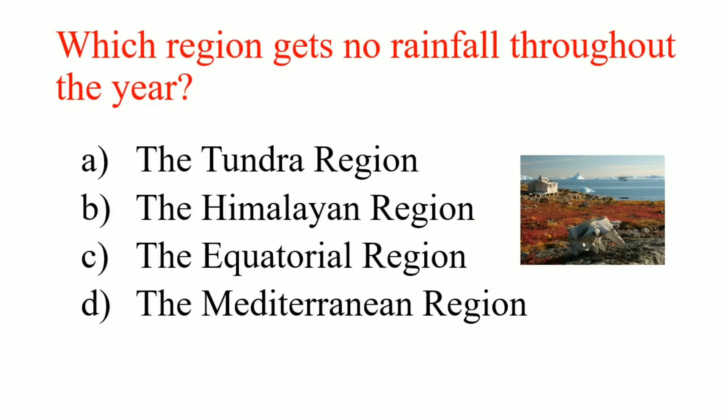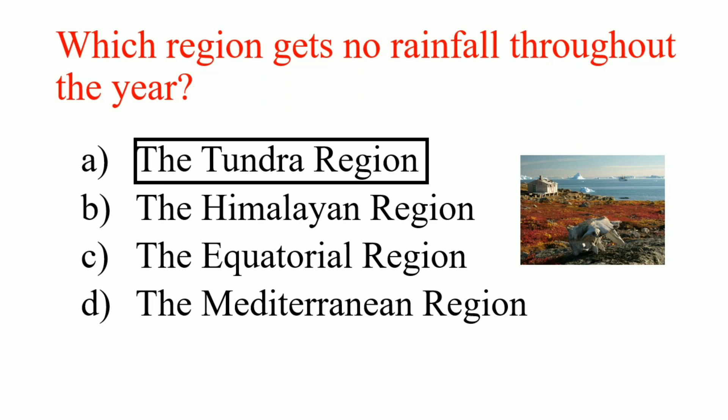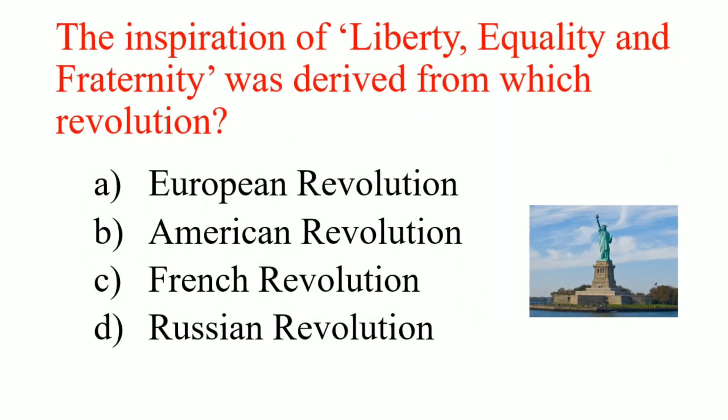Which region gets no rainfall throughout the year? Answer: The Tundra region. The inspiration of liberty, equality and fraternity was derived from which revolution? Answer: French Revolution.